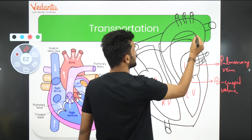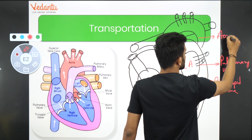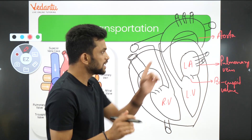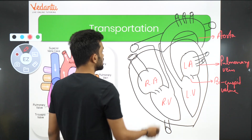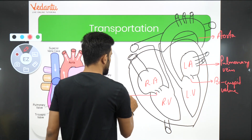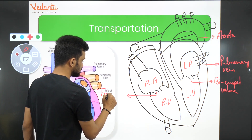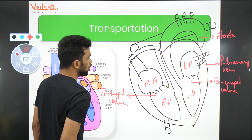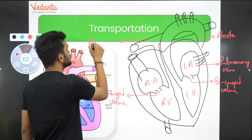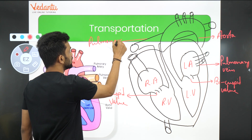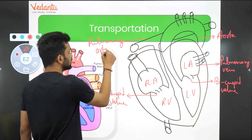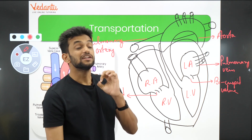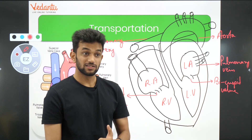We have a bicuspid valve over here. Then, what is this guys? This is the largest thing — the largest artery — that is the aorta. Aorta is coming out of the left ventricle, which takes the blood to all parts of my body. Aorta is the largest artery. Then coming to the right side, we have a tricuspid valve over here. Then we have the pulmonary artery — pulmonary artery is the only artery which carries deoxygenated blood.